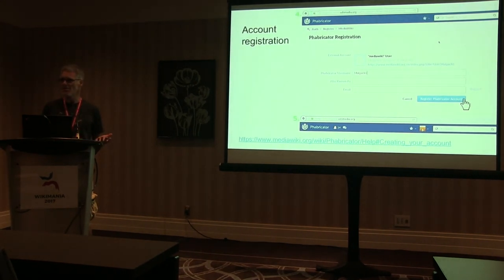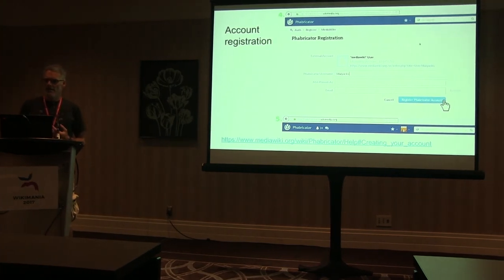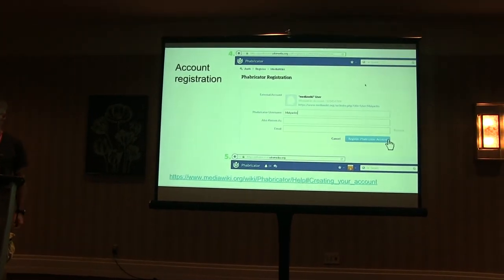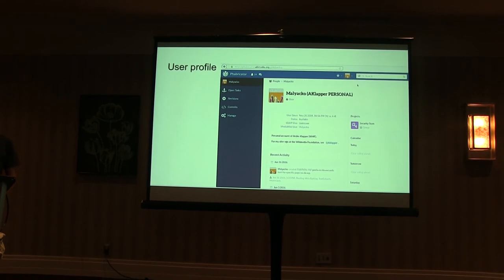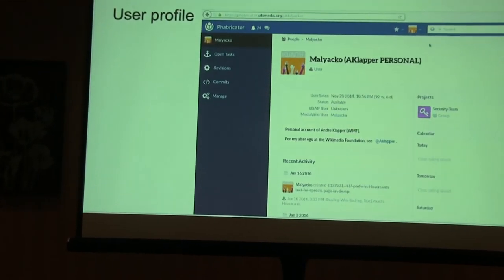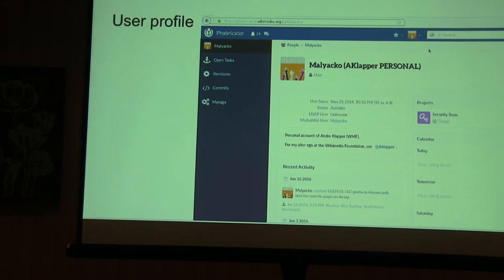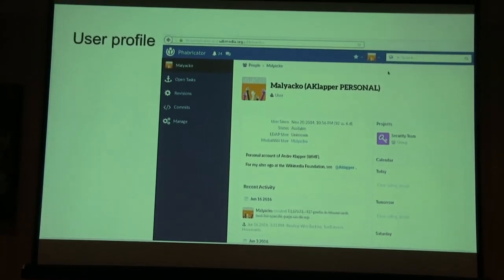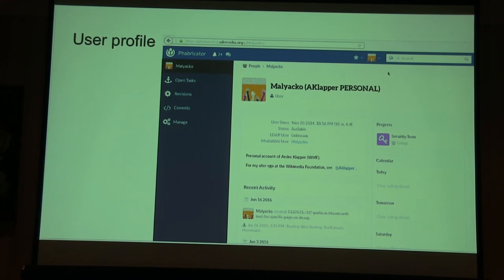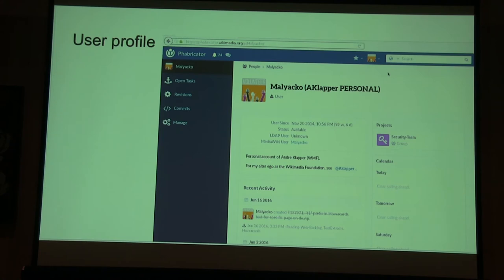Your Phabricator username can be the same as your Wikimedia username — that's helpful for you and helpful for others who will recognize you. You define your email so you can get notifications. From that point, you get a user profile where yourself and others can see your basic information, tasks assigned to you, and your recent activity. This is similar to the contributions page, only with more structure and richer information.